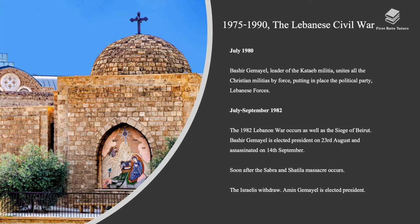Between July and September 1982, the Lebanon War occurred as well as the Siege of Beirut. Bashir Jumayel was elected president on August 23rd and assassinated on September 14th. Soon after, the Sabra and Shatila massacre occurred. Following the Israeli withdrawal, Amin Jumayel was elected president.